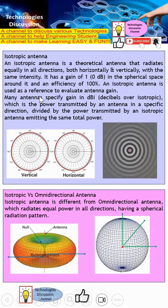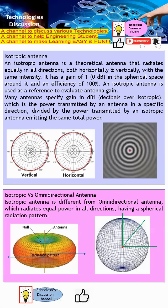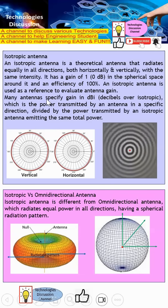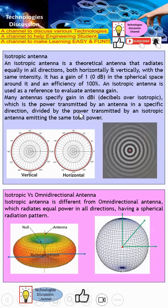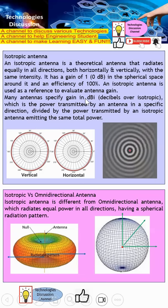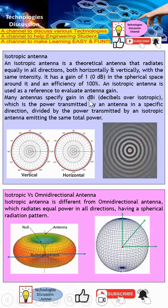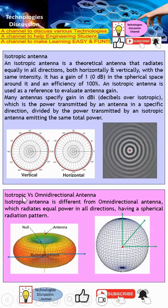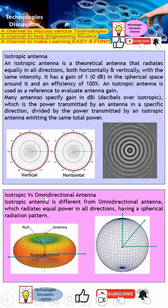Most of the time we describe the isotropic antenna as a way to evaluate antenna gain. When we want to measure antenna gain, we test one antenna, measure its power, and then divide that power by the power transmitted by the isotropic antenna. This reference unit is called dBi.